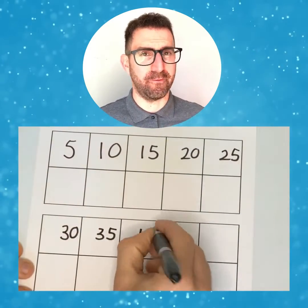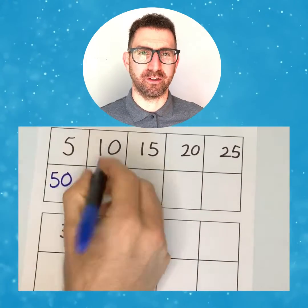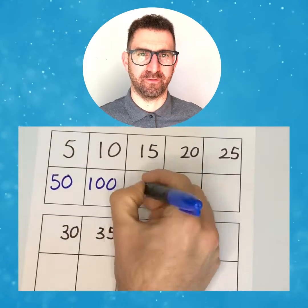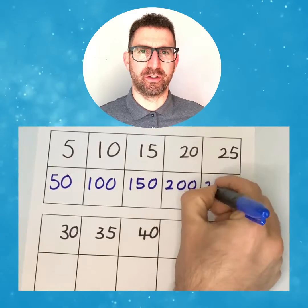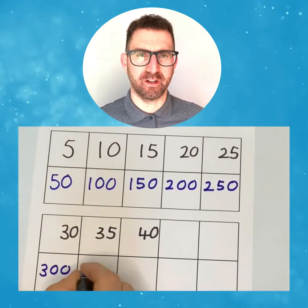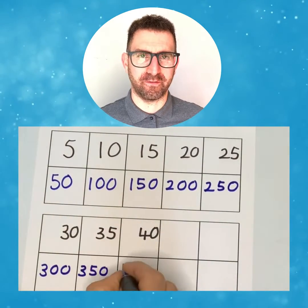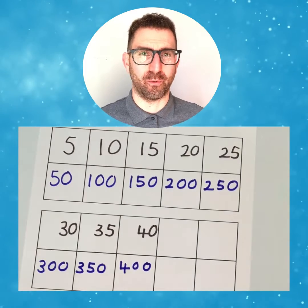In our 50 times table it would be 50, 100, 150, 200, 250, 300, 350, 400 and so on.